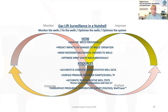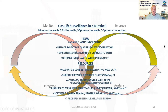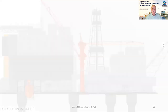Resources also include subsurface pressure and temperature surveys, flowing gradient surveys, static gradient surveys, and well tracer surveys. Software such as WellFlo, PipeSim, PROSPER, WinGlue, and WellTracer. A properly skilled surveillance person needs all of these.